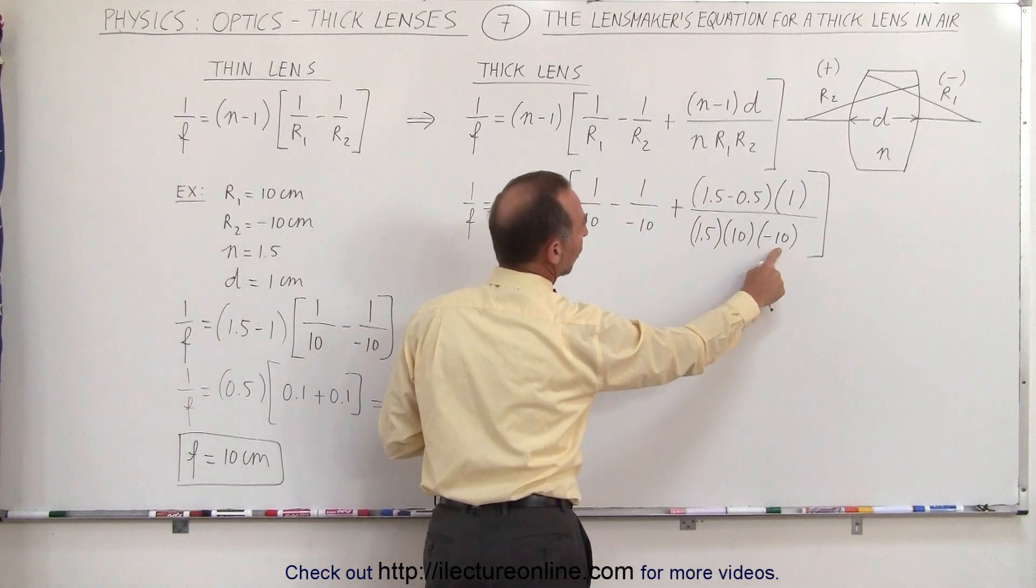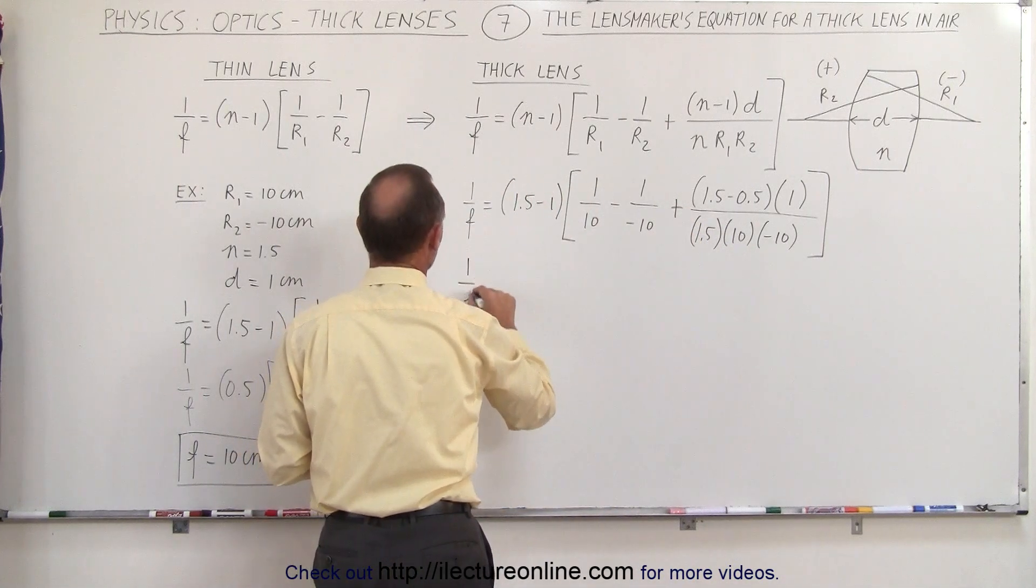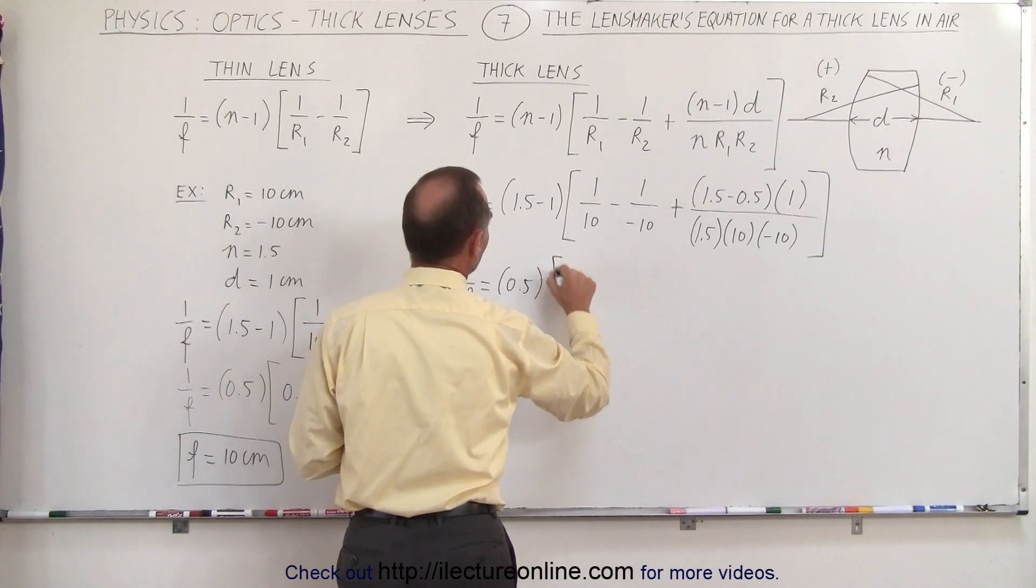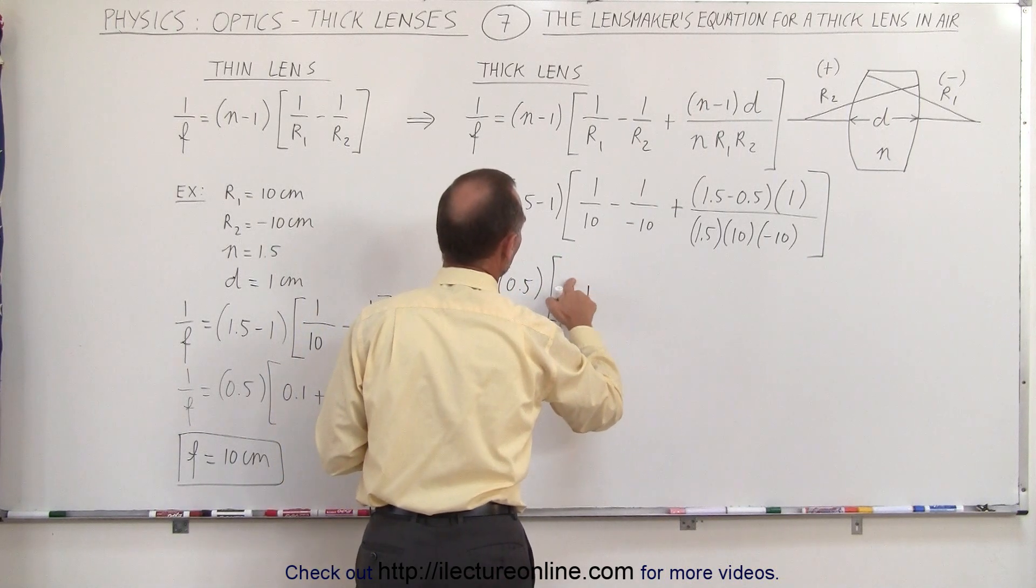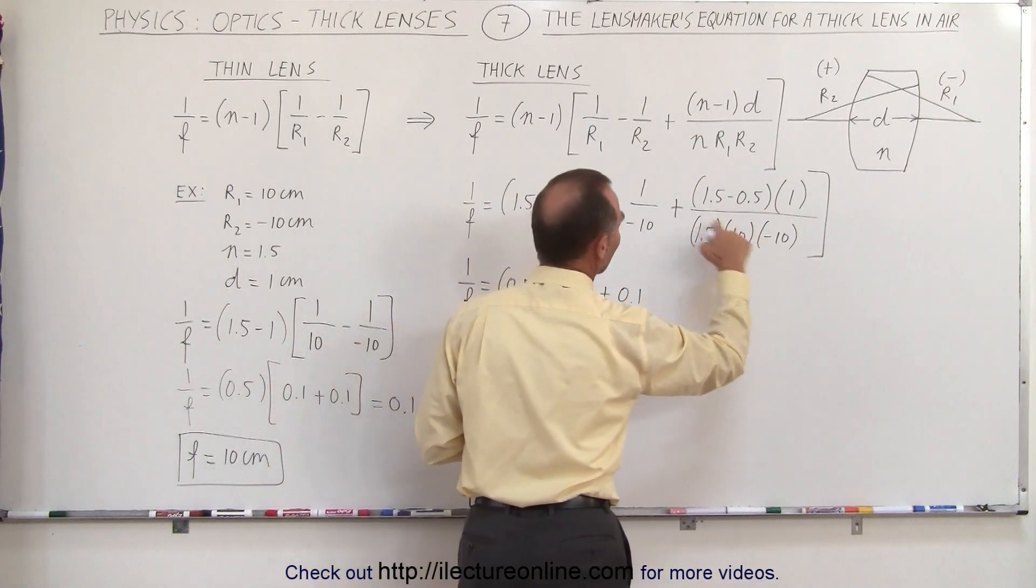This negative here will cause this to be a negative in the end. So we have 1 over F is equal to 0.5 times 0.1 plus 0.1, and this negative will make that a negative.